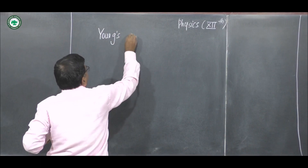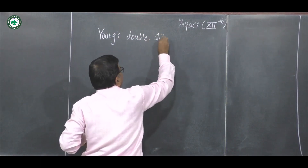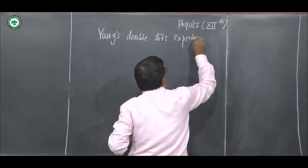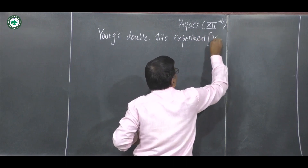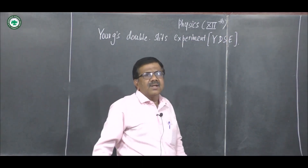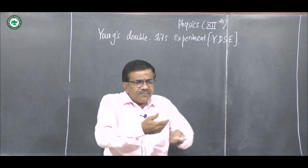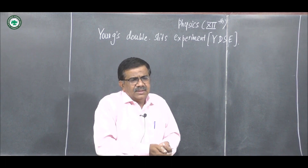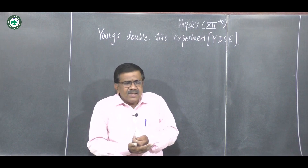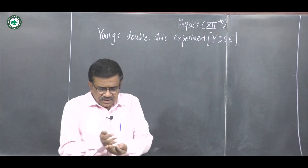Young is the name of the scientist. Young's double slit experiment — two slits are used — in short, we write it as YDSE. This was the first experiment to study the interference of light. Later on, different experiments were performed to study interference, but Young performed the first experiment to study the interference of light.